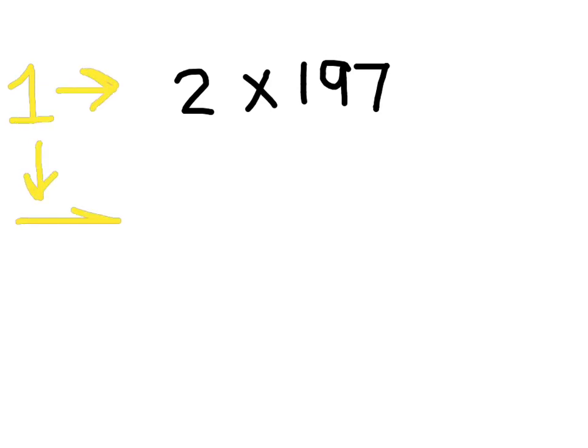Let's have a look at another one and continue to do this together. Let's do 2 times 197. Remember that first step is to compensate and solve. Press pause and have a go at that. That's correct. You should have turned 197 into 200. Doubled that and it would have turned into 400.